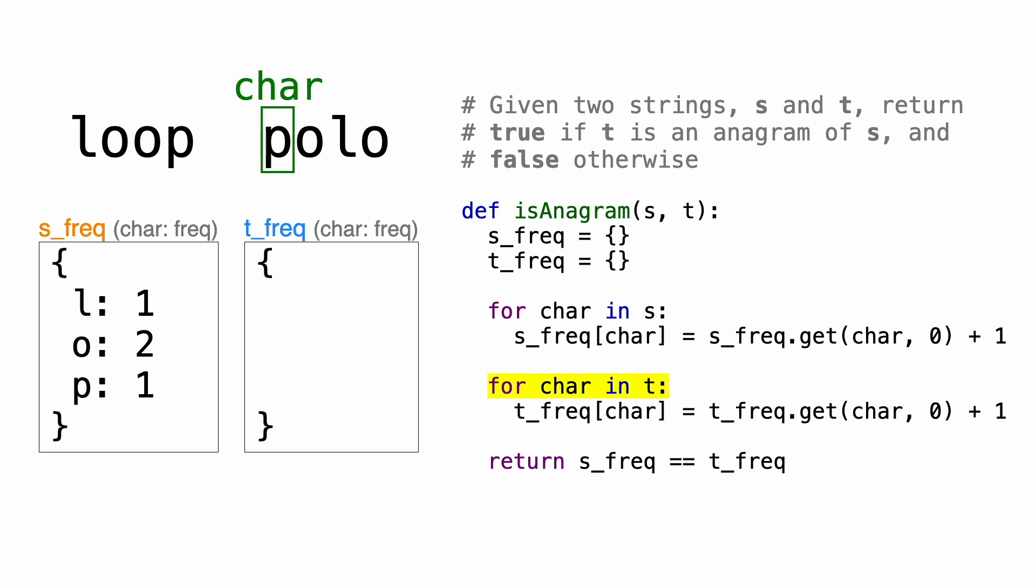We're going to do the exact same thing here, except store the character frequencies in the t-frequency dictionary. So the first character, p, doesn't exist in a dictionary, so we create it and initialize a value of one. o also doesn't exist, so it also gets a value of one. And neither does l, so we do the same thing. The last character, o, does exist, so we'll increment its value to two, and we're done with this loop.